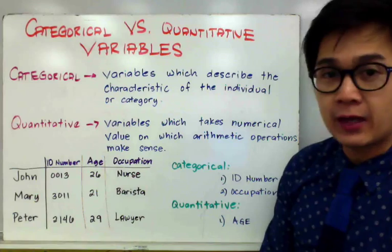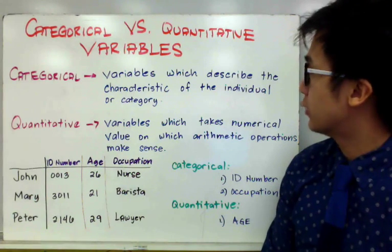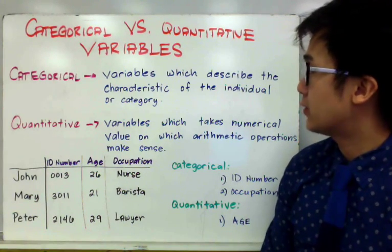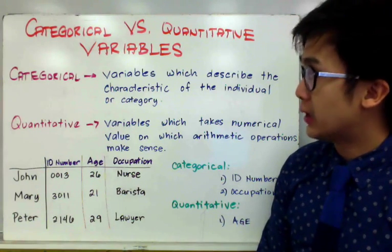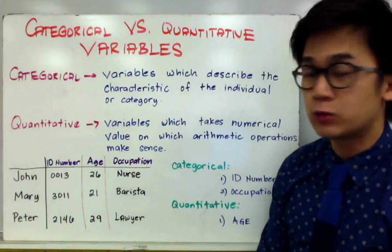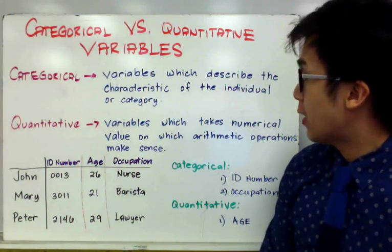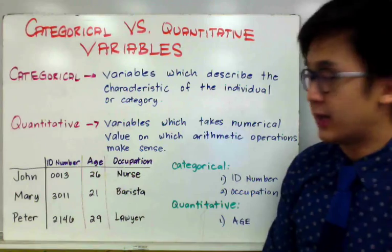By definition, categorical variables are variables which describe the characteristic of the individual or category. And quantitative variable, on the other hand, will be the variables which takes numerical value on which arithmetic operations make sense.